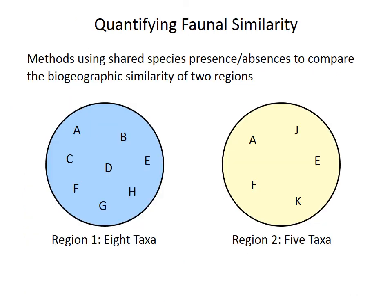Methods for quantifying faunal similarity rely on species presences and absences, as well as shared species between two regions. For example, consider these two regions. Region 1 in blue contains eight taxa, letters A through H, and region 2 contains five taxa. There are three taxa — A, E, and F — found in both regions, and we'll call those shared taxa. For simplicity, we can refer to these as N1 and N2, the number of taxa in each region, so N1 is eight for region one, N2 is five for region two, and we will call the number of shared taxa M, which is three.